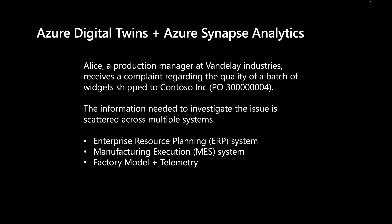The purchase order detail is held in the enterprise resource planning system, which is an IT data source. The manufacturing execution system holds the production schedule data, and that's an OT data source. And lastly, the factory model and the telemetry from the stations that produce the widgets is another OT data source.